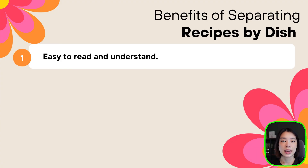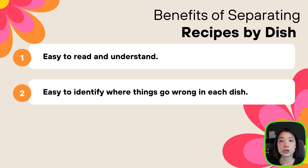That would be very confusing, but usually recipes are not written that way. They're written separately based on each dish. The reason they're written that way is: one, it's so much easier to read and understand, and you know exactly which ingredients and which steps belong to which dish. The second one is that if you were to do something wrong with a specific dish or forget a certain ingredient, you know exactly where the problem is and can go straight to figuring out how to solve it.